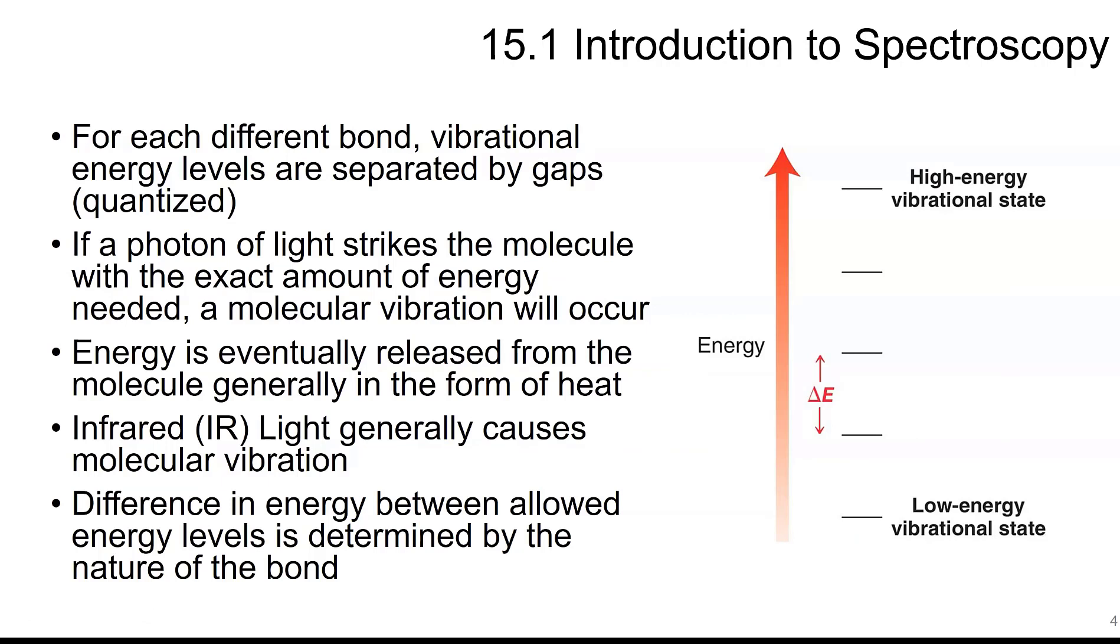So for each bond, there's a vibrational energy, and those are separated by gaps which are quantized. So if a photon of light strikes the molecule with a specific amount of energy, it's going to cause a vibration, and the energy released from the molecule is generally emitted in light. So infrared causes this molecular vibration, and the difference between the allowed energy levels is determined by the types of bonds. So you get this difference in energy after the vibrations, and that's going to give off some sort of light.